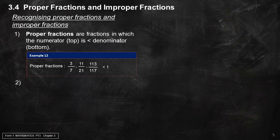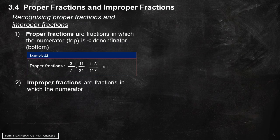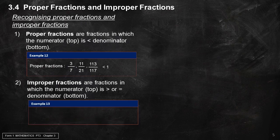Improper fractions are fractions in which the numerator (top) is bigger than or equal to the denominator (bottom). Example 13: Some improper fractions are 6 over 6, 31 over 21, 119 over 117, etc. All improper fractions are bigger than or equal to 1.